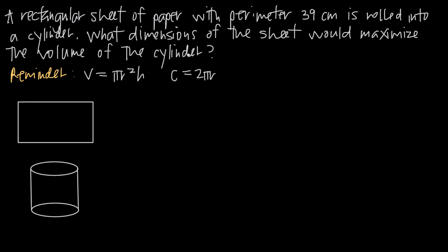As with any applied optimization problem, the first thing you want to do is clear out all the clutter. Go straight to the word 'maximize' or 'minimize' to figure out what we're trying to optimize, because that's the function we're going to be working with. Looking at our problem, we have 'maximize the volume' — we can ignore everything else, it just says maximize the volume.